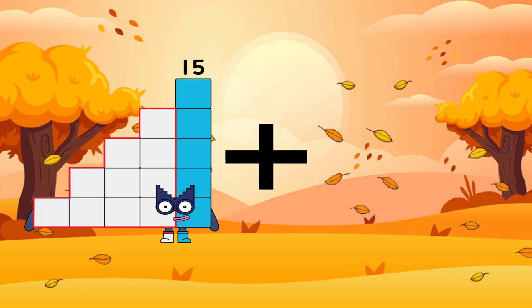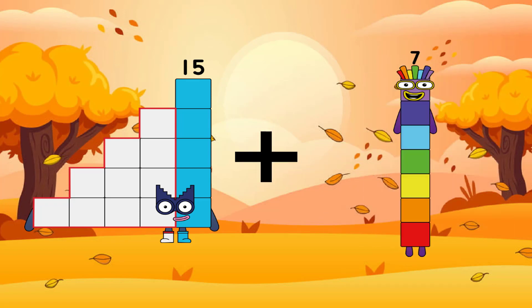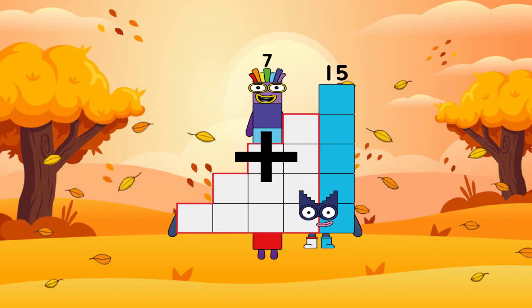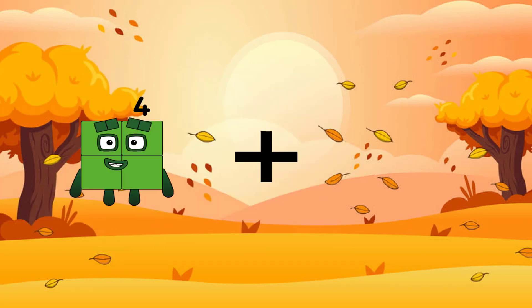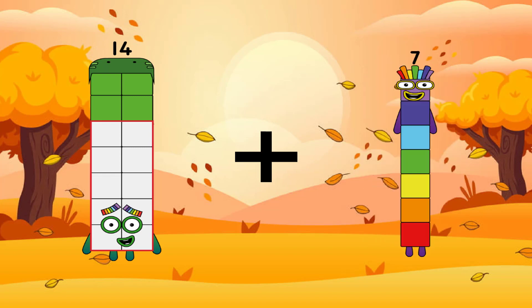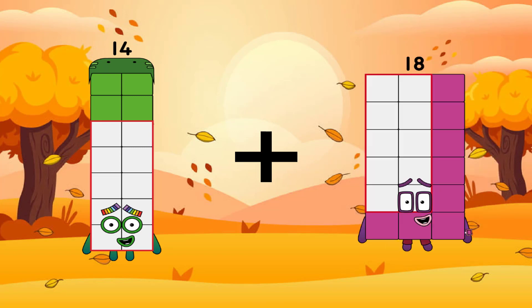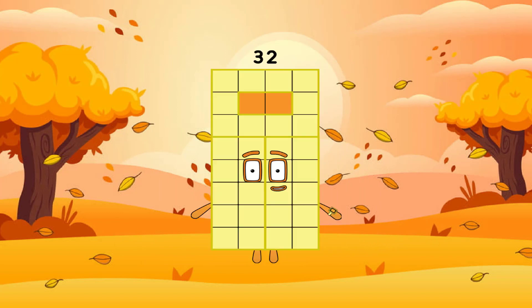15 plus 7 equals 22. 14 plus 18 equals 32.